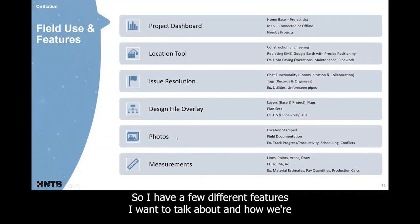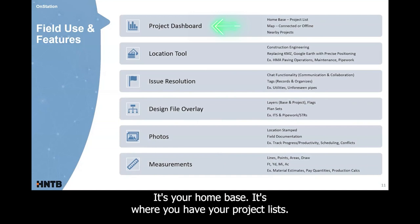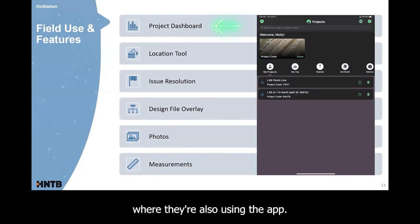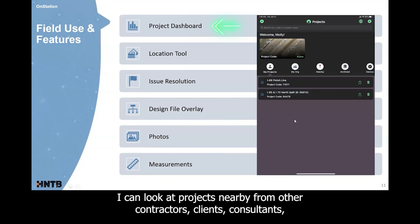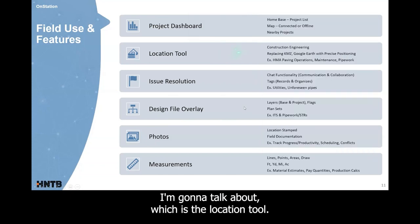So I have a few different features I want to talk about and how we're utilizing them in the field. The project dashboard, first and foremost, when you open up the app, that's the first thing you see. It's your home base. It's where you have your project lists. It's where you can connect to your map online or offline. You can look at different options from your organization. So if I go into my org you can see my projects in Indiana, I can also see projects in Michigan and Wisconsin where they're also using the app. I can look at projects nearby from other contractors, clients, consultants, and I can select the project that I'm looking for to get into the application and start using the next thing I'm going to talk about, which is the location tool.